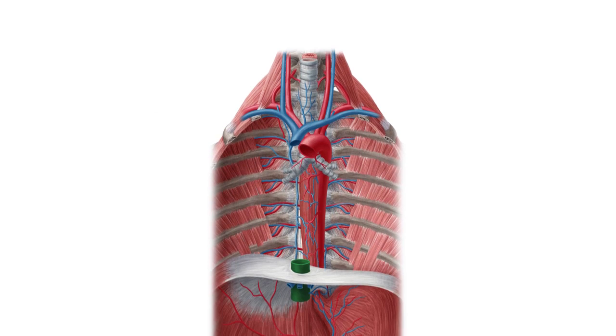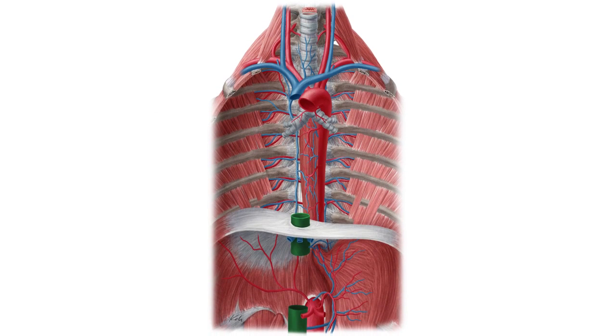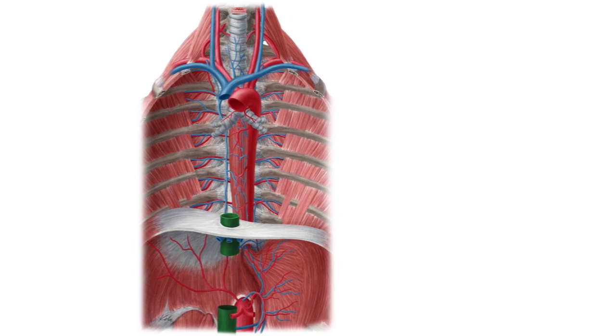Hello again everyone, it's Matt from KenHub, and the focus of this video is the inferior vena cava, or IVC, which you can now see a part of it highlighted in green from the anterior view of the thorax and abdomen.